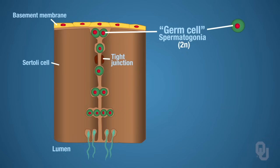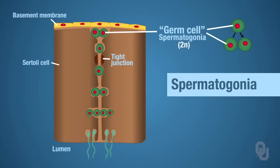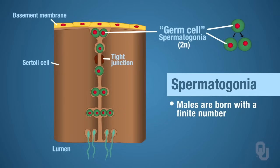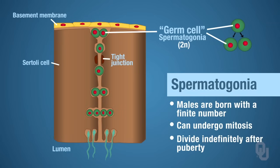We're going to start at the basal compartment with the spermatogonia. As the sperm migrate toward the lumen, they are undergoing development. Males are born with a finite number of spermatogonia; however, these spermatogonia can undergo mitosis, so they continually and repeatedly divide. They are dividing indefinitely after puberty — males keep producing spermatogonia throughout their life.